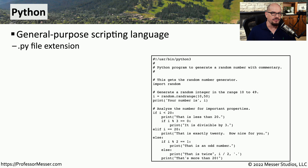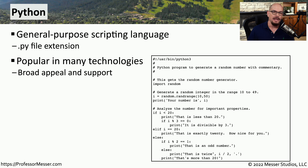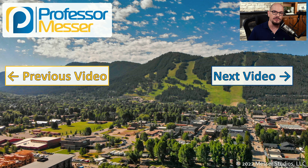A general purpose scripting language that runs on many different operating systems is Python. Python scripts are commonly written with a .py file extension. The popularity of Python has really come about due to the use of automating cloud-based services, but you can use Python on any operating system to automate almost anything at the command line. If you need to write a script that will run across many different operating systems, you might want to consider using Python.